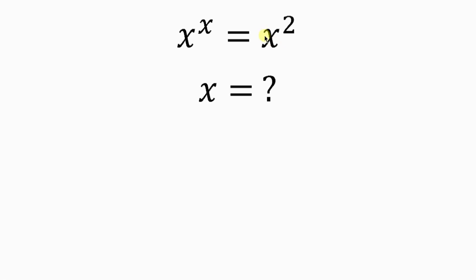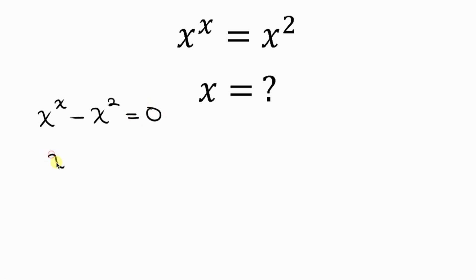Our first step is to move x squared to the left-hand side, so we have x to the x, and as x squared crosses to the left it becomes minus x squared, giving us x^x minus x² equal to zero.